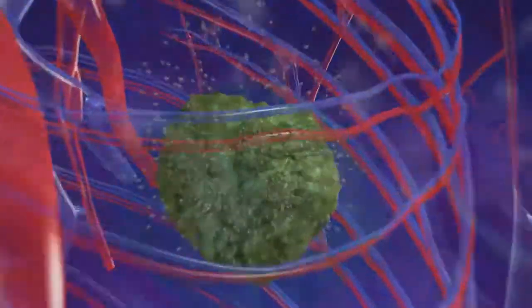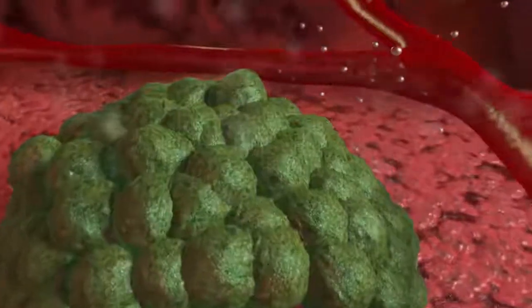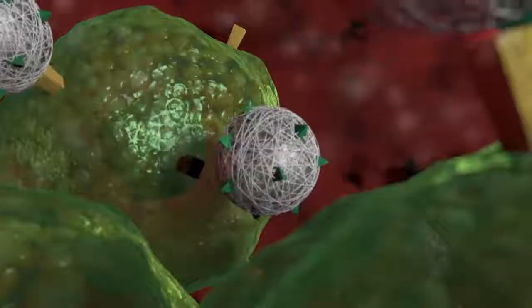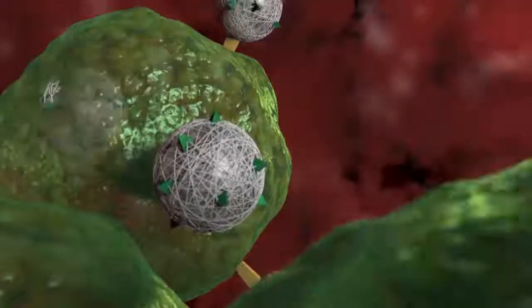The nanoparticle will then leak out of permeable vessels near the tumor. It will bind to special receptors on the surface of cancer cells. Once the conjugate is bound to the cancer cell, the nanoparticle is brought into the cancer cell.